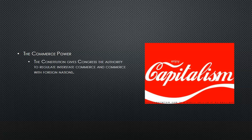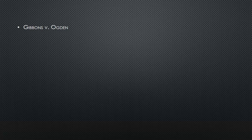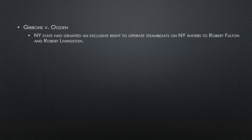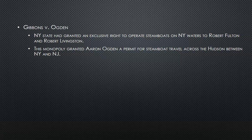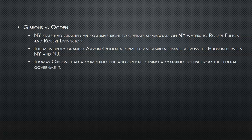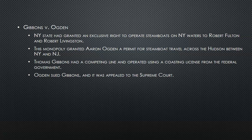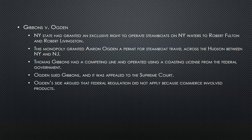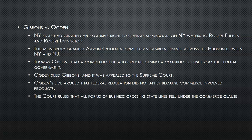The Commerce Power. The Constitution gives Congress the authority to regulate interstate commerce and commerce with foreign nations. This has greatly increased federal power due to interpretations of what commerce is. In the case of Gibbons v. Ogden, a monopoly granted Aaron Ogden a permit for steamboat travel across the Hudson between New York and New Jersey. Thomas Gibbons had a competing line operating under a federal coasting license. Ogden sued Gibbons, and it was appealed to the Supreme Court. Ogden's side argued that federal regulation did not apply because commerce involved only products, but the court ruled that all forms of business — not just products — moving across state lines fell under the Commerce Clause.